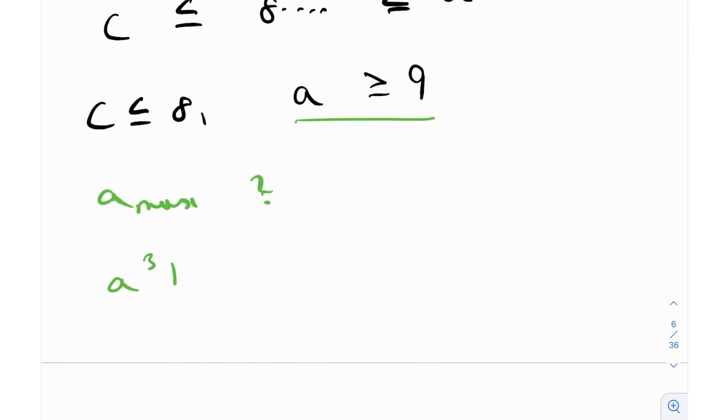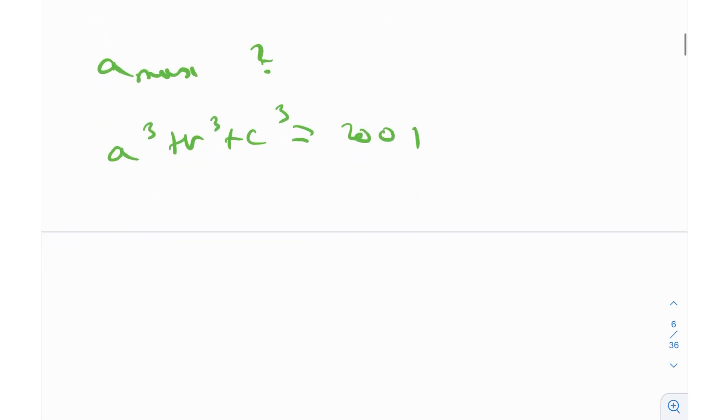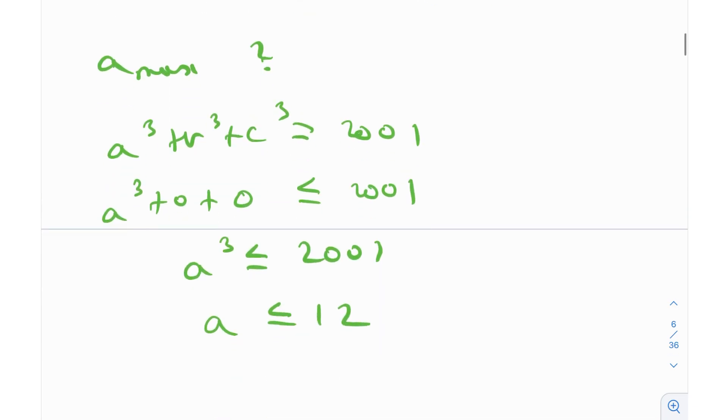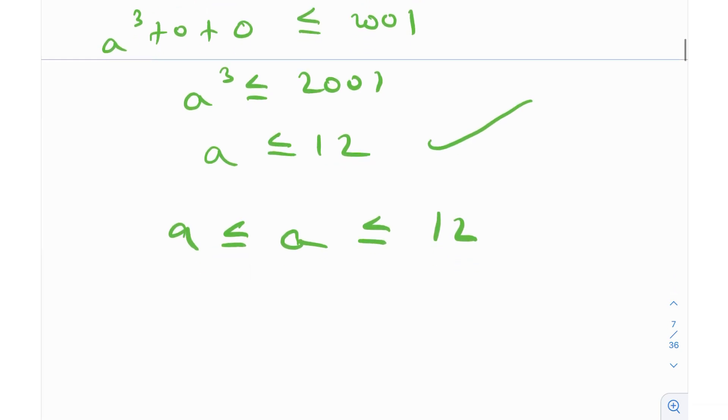If you just look at the equation, A³ + B³ + C³ = 2001. If I just tell you A, B, and C can be any positive real numbers, including 0, then the maximum of A would occur when B and C are 0. So using a similar idea, A³ + 0 + 0 ≤ 2001. So A³ ≤ 2001. If I take the cube root, I get A ≤ 12, which is amazing. From this and this, I can really bound the values of A between 9 and 12.